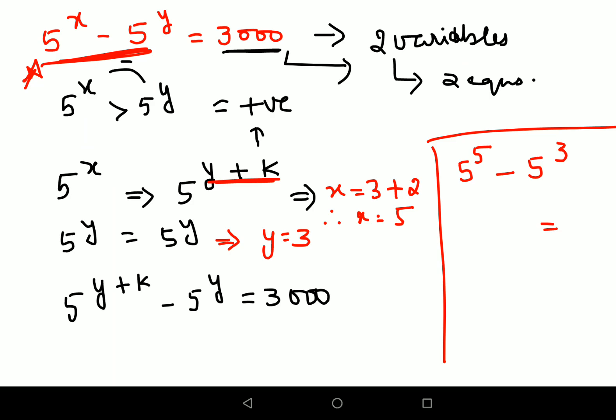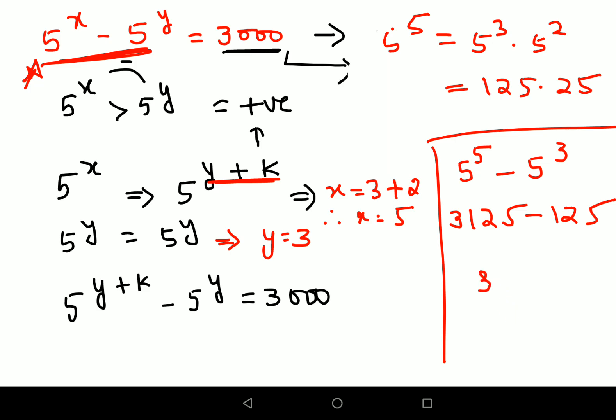So now going back, let's do the substitution. 5 raised to 5. See, please understand. 5 raised to 5 is nothing but just what? 5 raised to 5 can also be written as 5 raised to 3 into 5 raised to 2. 5 raised to 3 is nothing but what? 125, 25 into 25. When you do that, when you do the multiplication, you will get as nothing but what? 3125. And here I know the 5 cube value is nothing but what? Minus 125. So when you subtract 3125. So when you subtract 125 from 3125, your final answer comes out to be 3000.